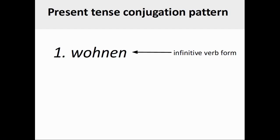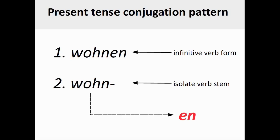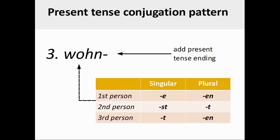There are three basic steps for conjugating a German verb. The first step simply requires you to have a verb in the infinitive form. In the second step, you isolate the verb stem by removing the infinitive ending. For the verb you see on the screen, this means you drop off the infinitive ending -en, leaving you with the verb stem.